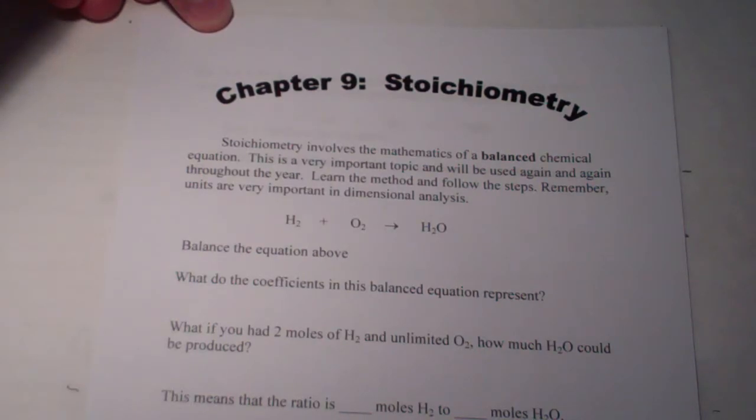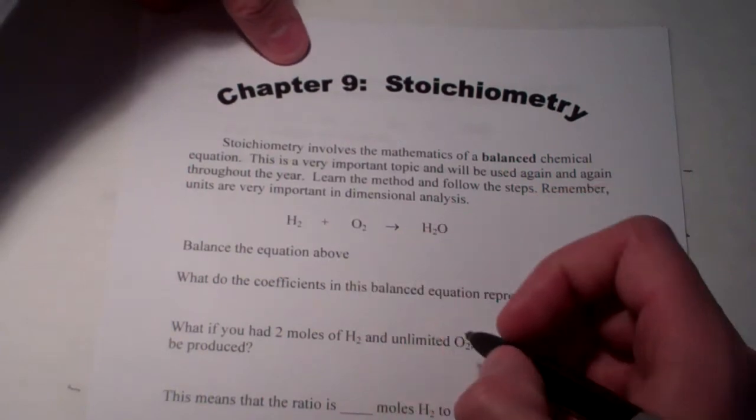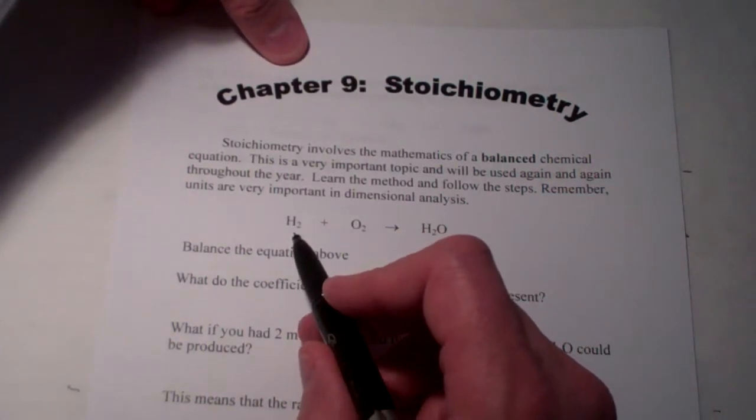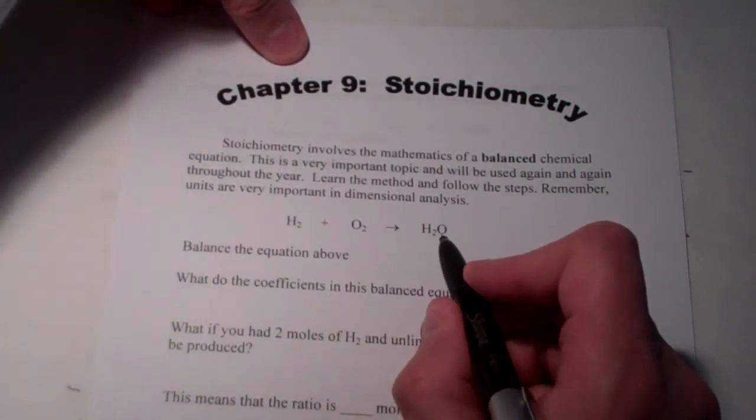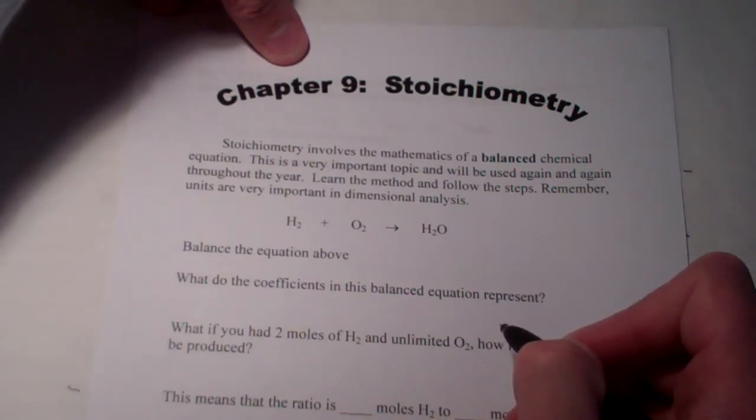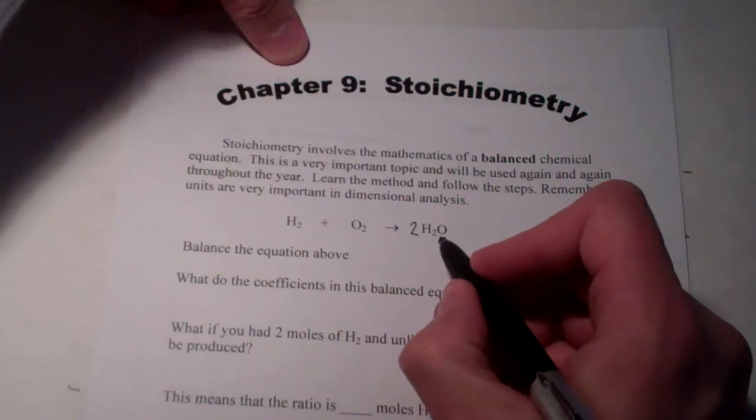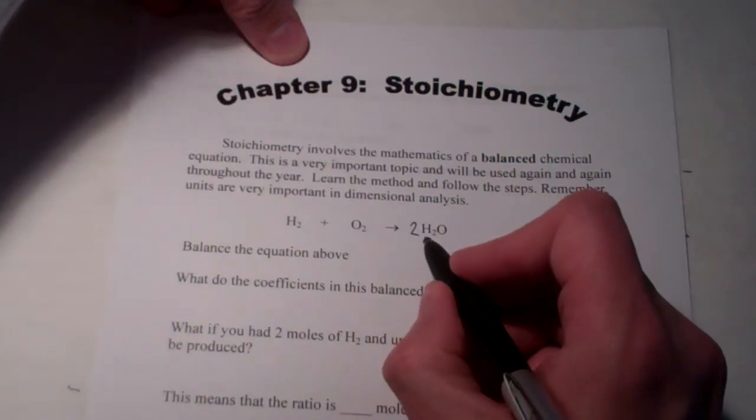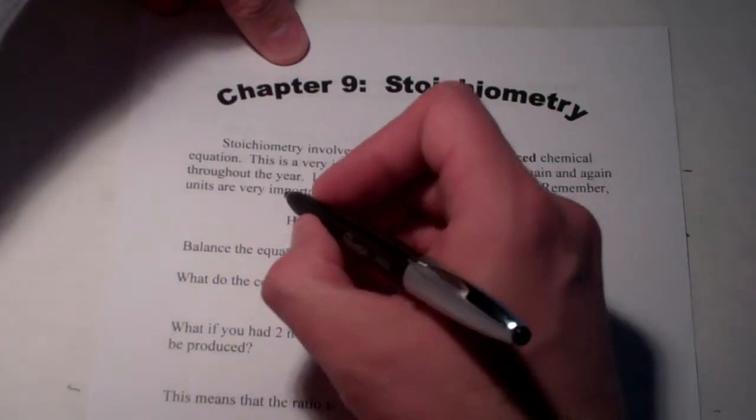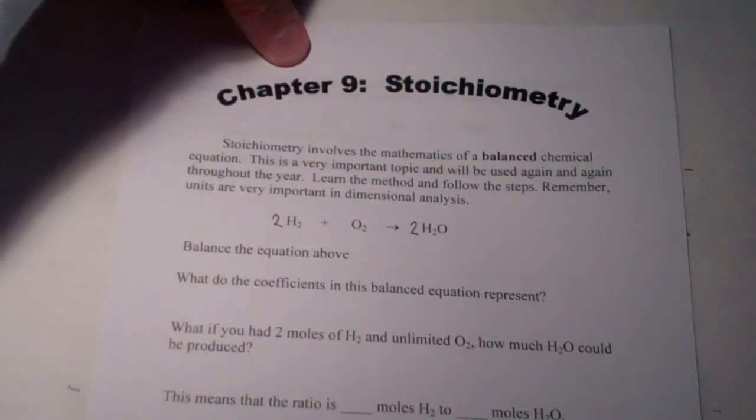Let's start with something relatively simple, the synthesis of water from its elements. We have hydrogen and oxygen gas reacting to form water. To balance this, let's put a 2 in front of H2O. That gives me two oxygens on both sides. I have four hydrogens, so I need to put a 2 in front of H2 on the reactant side.